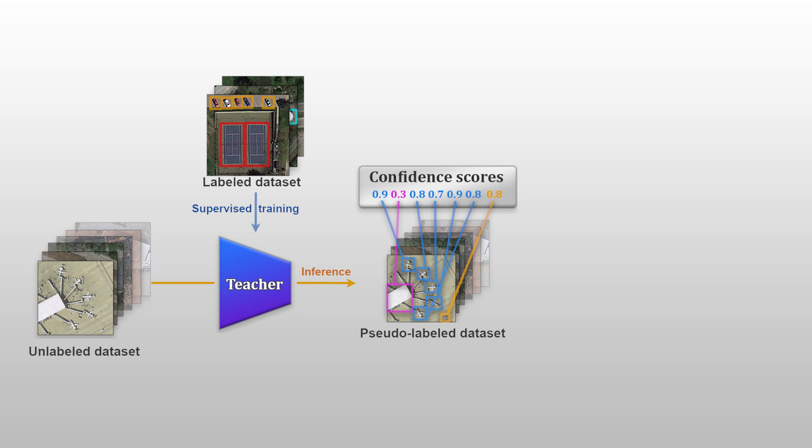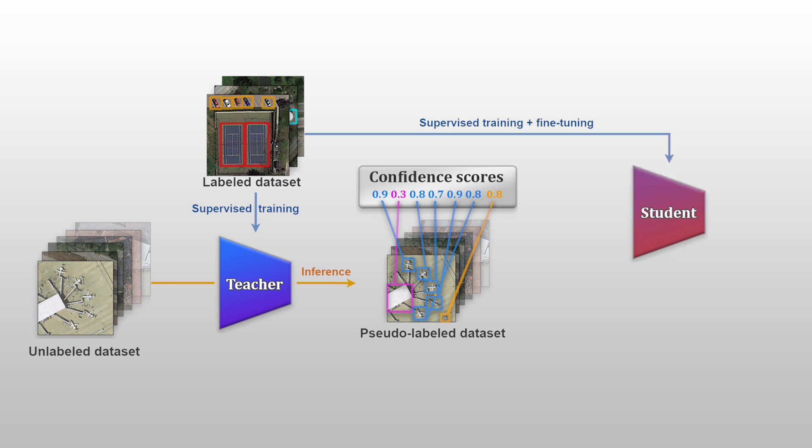For our method, let's first get back to the simple pipeline we described earlier. A first model, that we call the teacher, is trained in the usual way with a small amount of annotated data and reaches some performance. Now, the goal is to increase this performance by adding new data which are not annotated — this is what we call raw data. For that, we start by producing pseudo-annotations with the teacher on the whole raw data, basically predicting where potential objects are. Each prediction is associated with a confidence score, reflecting the certainty of the teacher in its prediction. Now that we have access to these new pseudo-annotations, we can use them to train another model, that we call the student, on both the annotated and pseudo-annotated data. This is why it's called a semi-supervised method — we are both using annotated and raw data to train our final model.